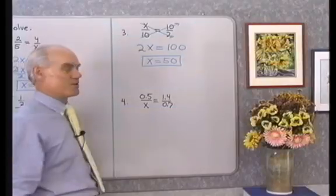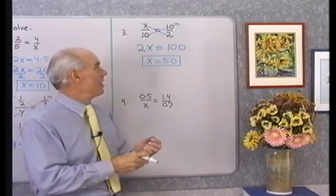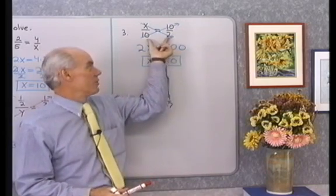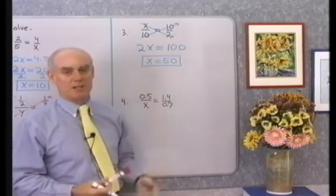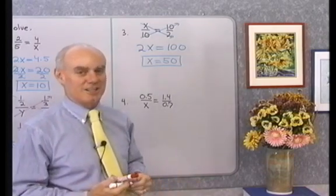So, they seem to get easier as we go. Simply apply that means extremes property. I multiply down this diagonal, multiply up that diagonal. I get an equation that's equivalent to this, and that gives me the simple equation to solve. I divide both sides by 2, and I end up with x is equal to 50.